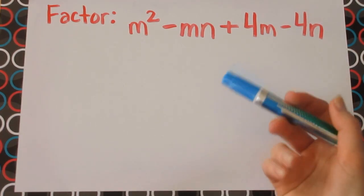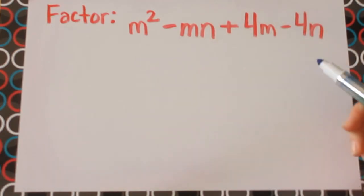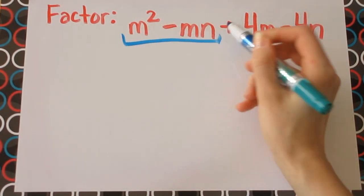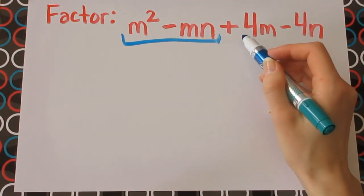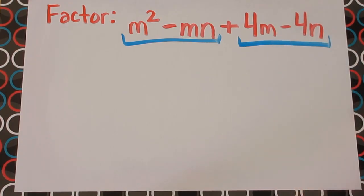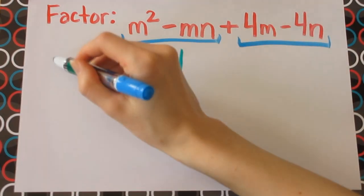So in order to tackle this question we're going to divide these terms into two groups. The first group is the first set of terms m squared minus mn, and the second group is the second two terms 4m minus 4n. So let's get started over here.